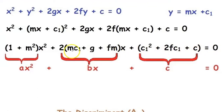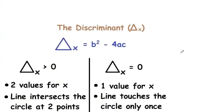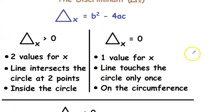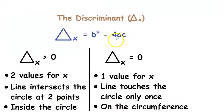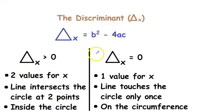So now this is in the form ax² + bx + c = 0. In a quadratic equation we have something called the discriminant. The discriminant Δ equals b² − 4ac. This discriminant is used to tell whether we have two values for x, one value for x, or no value for x.